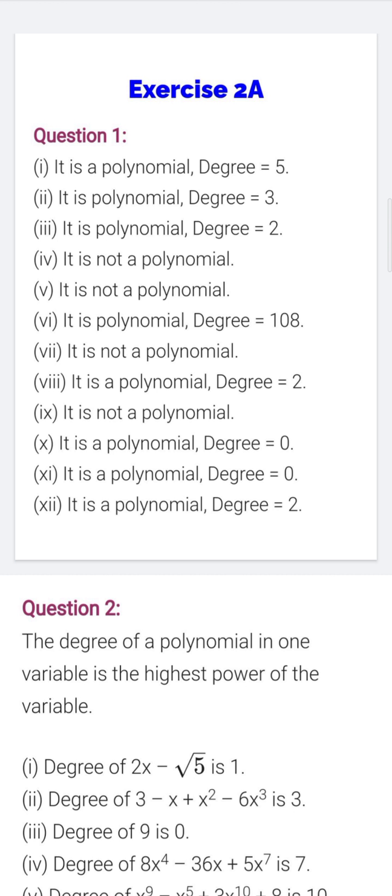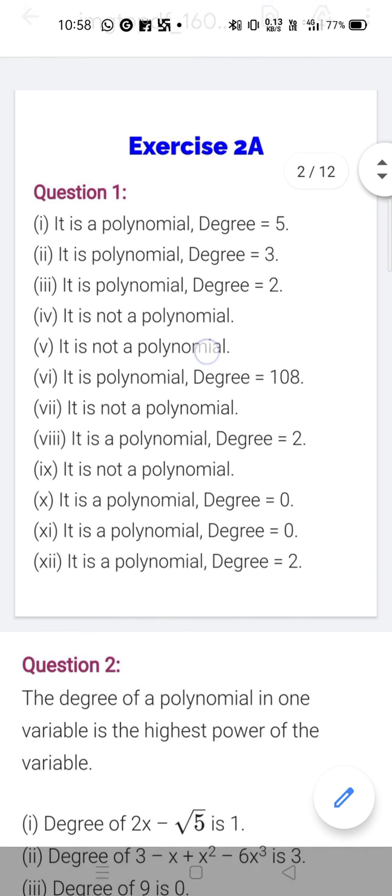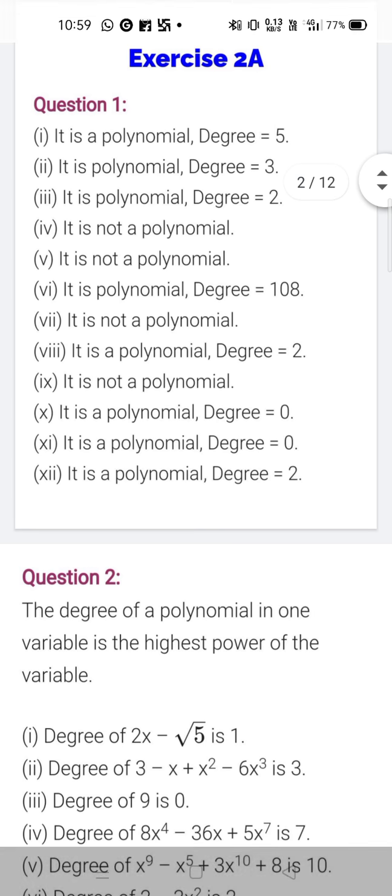So first of all, you will decide if it is a polynomial or not. After that, we will reach this conclusion to this degree. The highest power of the variable is 5. So you can see that in the first solution, it is a polynomial of degree 5.